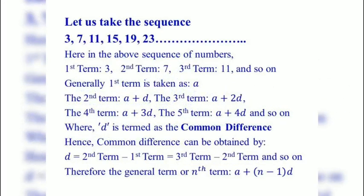Let us take the sequence 3, 7, 11, 15, 19, 23. In the above sequence of numbers, first term is 3, second term is 7, third term is 11 and so on. Generally, first term is taken as A,